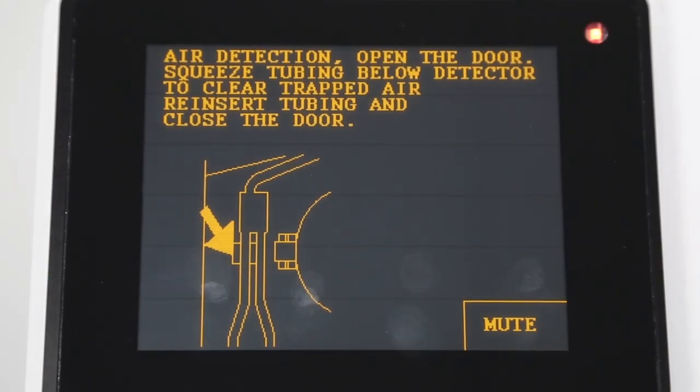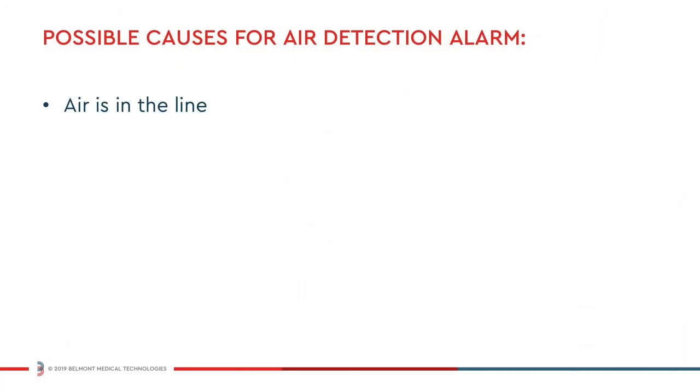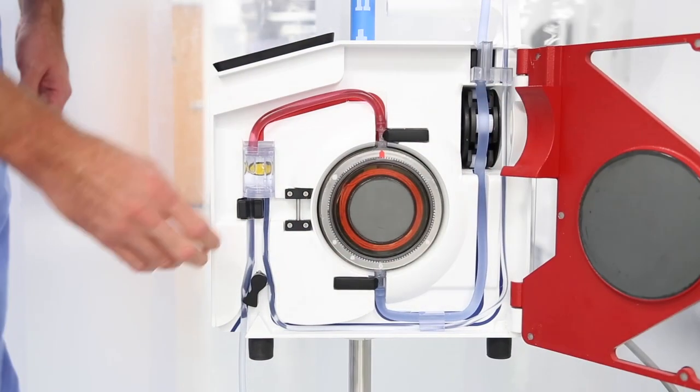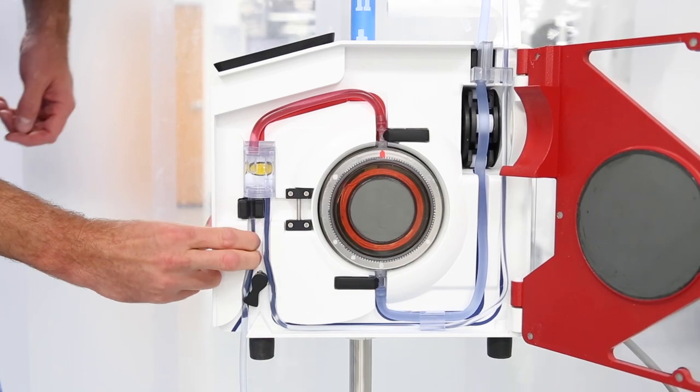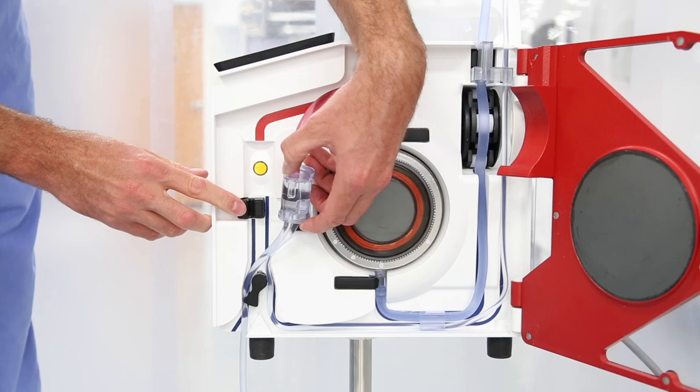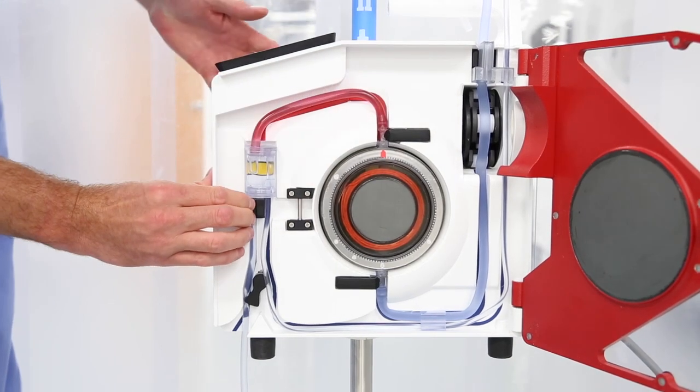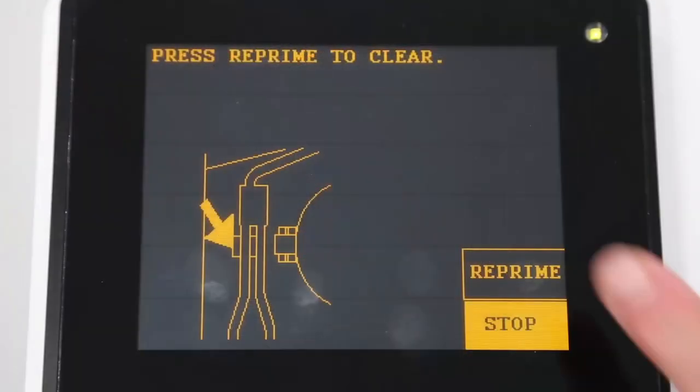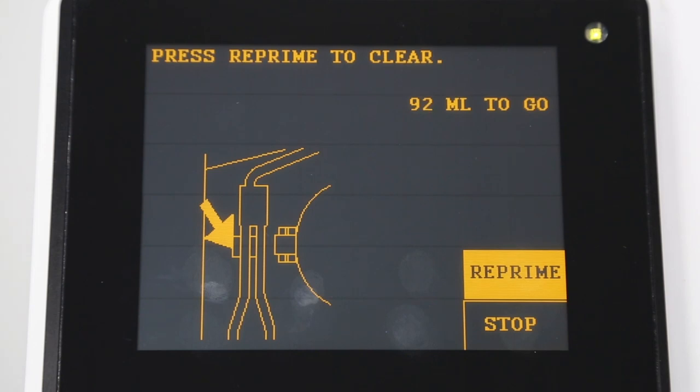The air detection alarm would be triggered if air is in the line, the secondary air detection sensor is not firmly seated, or if the air detector sensor is dirty. First open the door to silence the alarm. Squeeze the tubing directly below the air detector to clear any trapped air out of the sensor. Check the air detector and make sure that it is clean and the infuse line is properly seated inside the air detector. Finally, press reprime. The system will resume infusion when the repriming process is complete.